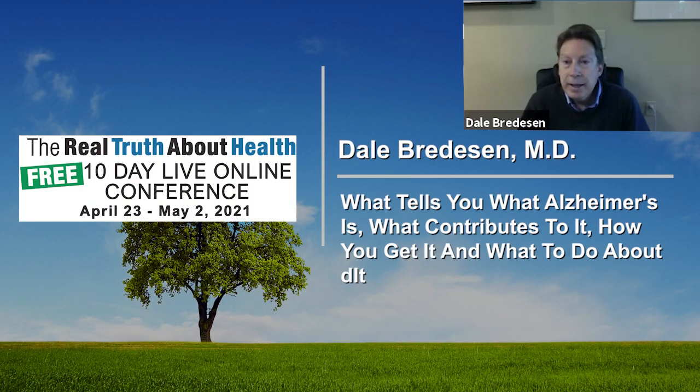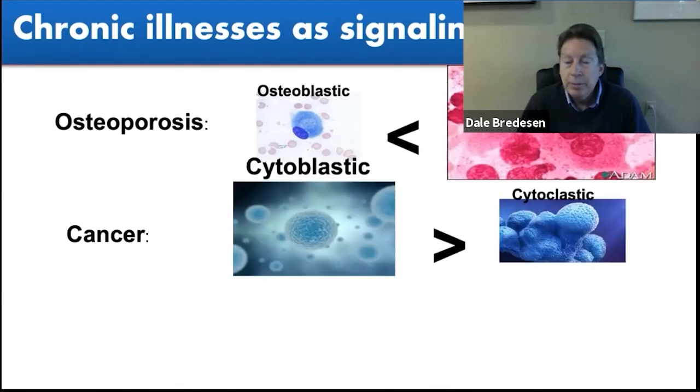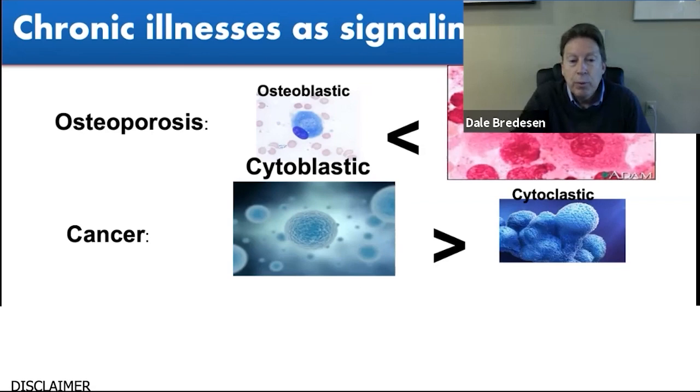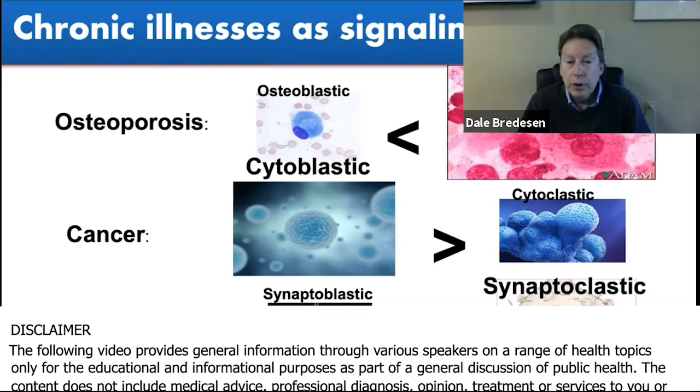What this suggests is that many of these chronic illnesses, like Alzheimer's, are really signaling imbalances. I mentioned osteoporosis - you outstrip for years the osteoblastic activity with the osteoclastic activity. Cancer, same idea, but now because of typically somatic mutations, you have more cytoblastic activity. You are making and keeping more cells than turning over the cells, cytoclastic activity, and you develop what's called cancer. The same sort of thing happens with Alzheimer's disease.